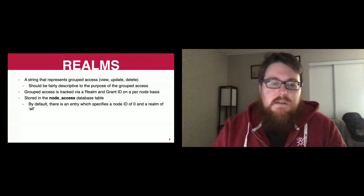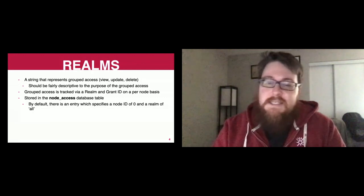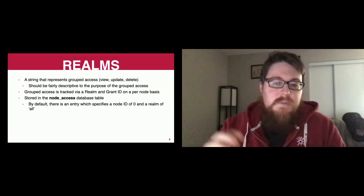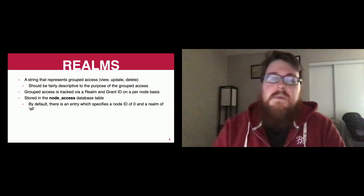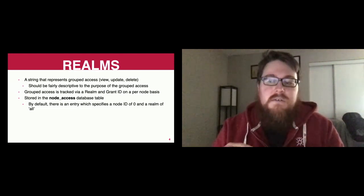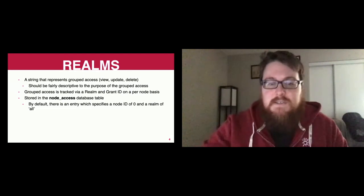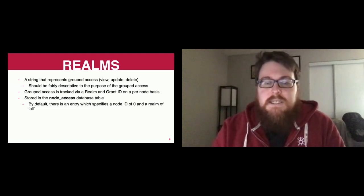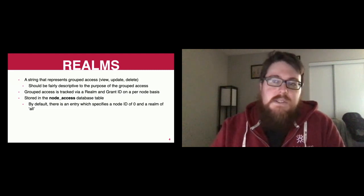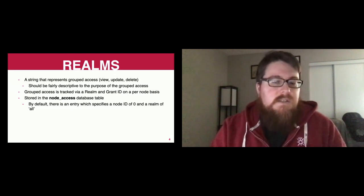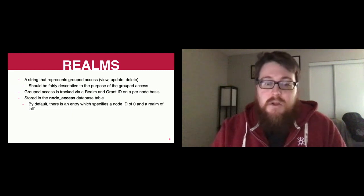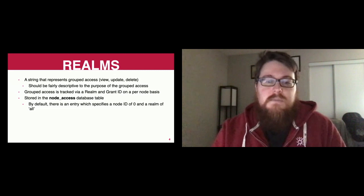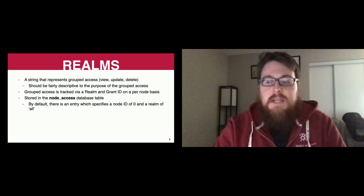This group access is tracked via a realm and a grant ID on a per node basis. Each node has that realm and grant ID assigned to it. You can have multiple realms and multiple grant realm ID combinations for the same node - different levels of access. You could have a view one, a view-update one, a view-update-delete, all slightly different but all targeting the same node. That's all stored in the database in the node access table. By default on a site not using custom node access, you'll see an entry with a node ID of zero and a realm of 'all' and a GID of zero - basically a blanket allowing view access across the board.